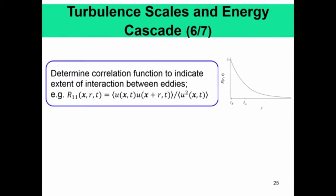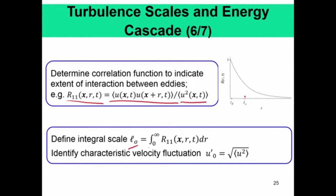Now we can estimate different length scales. The characteristic length scale in the inertial range can be estimated using the autocorrelation function R_11(x, r), defined as the average of u(x,t) times u(x+r) at the same time, divided by the variance of u. This autocorrelation function is correlated at zero separation and reduces with increasing r — unlike noise, which would give a delta function. The integral length scale L_0 is defined as the integral from 0 to infinity of R_11(x, r) dr, and the characteristic velocity fluctuation is the RMS of velocity.